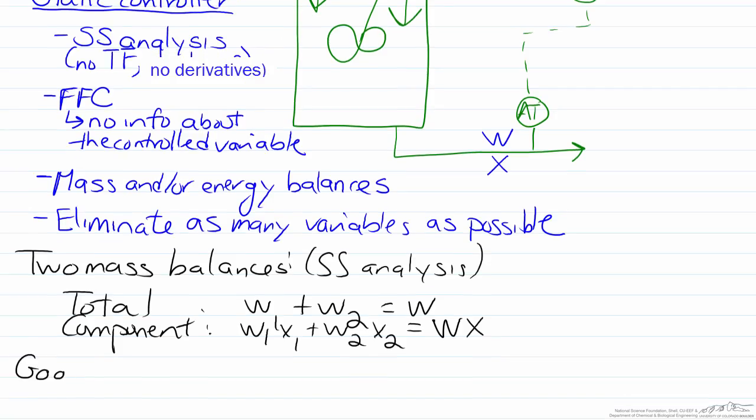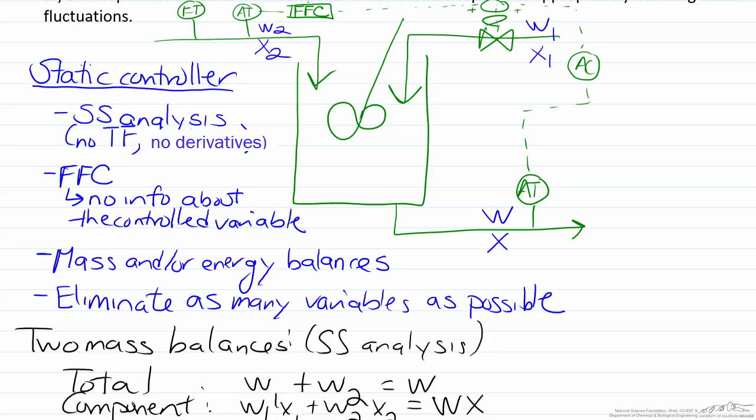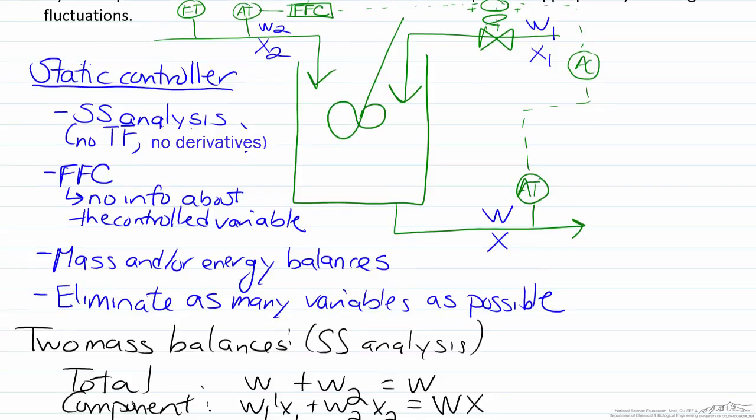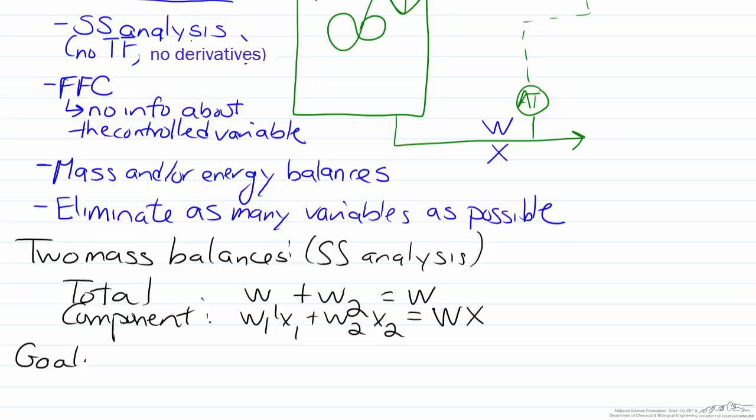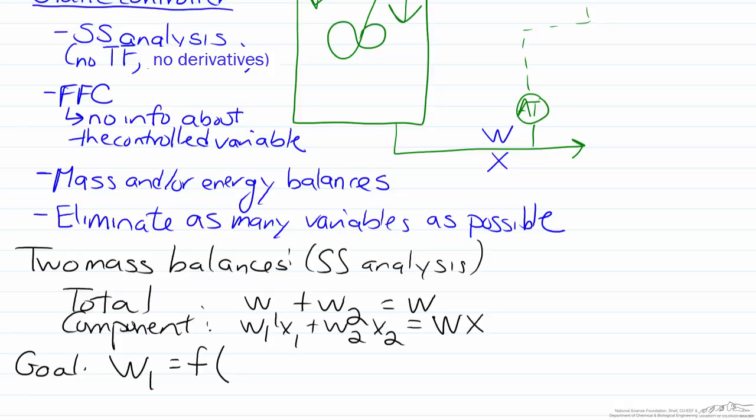If we think about what we want to do here, our goal, if we look at our diagram, is to send an appropriate signal to the valve which is controlling W1. Therefore what we want is W1 to be a function of the two disturbance variables, W2 and X2, and then other variables as needed.